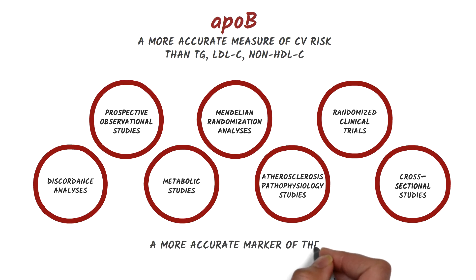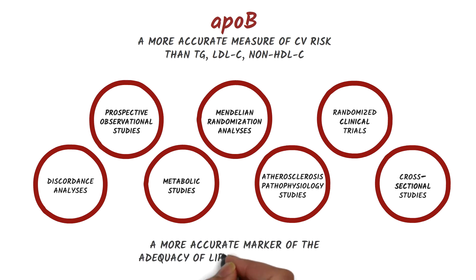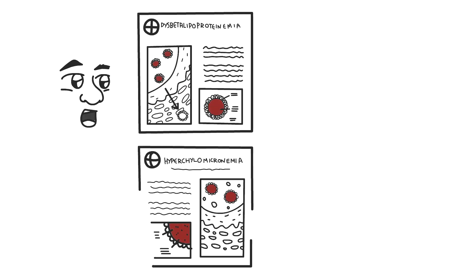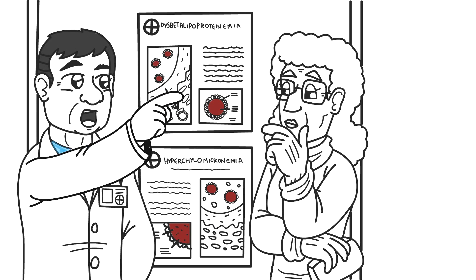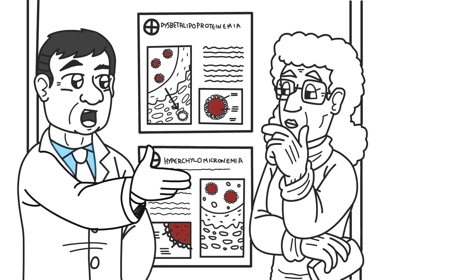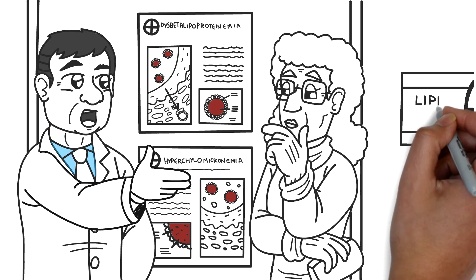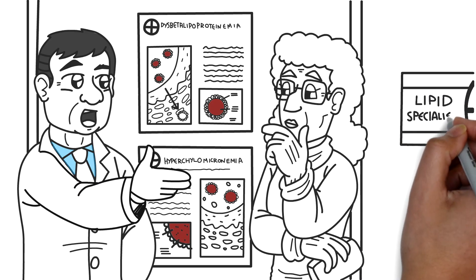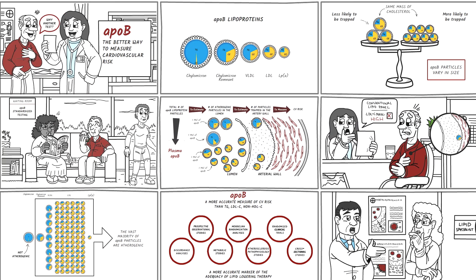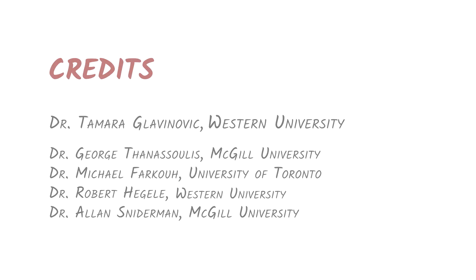ApoB is also a more accurate marker of the adequacy of lipid lowering therapy. There are two special cases when ApoB will not suffice: dysbetalipoproteinemia and hyperchylomicronemia. These cases are very rare and are best managed by lipid specialists. In the next video, we'll discuss how to use ApoB in clinical care for both diagnosis and treatment.